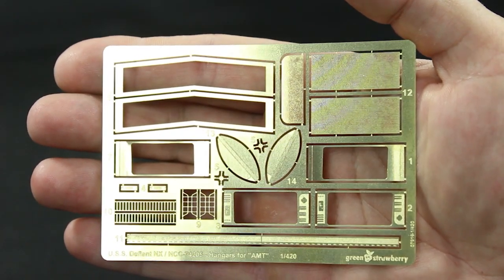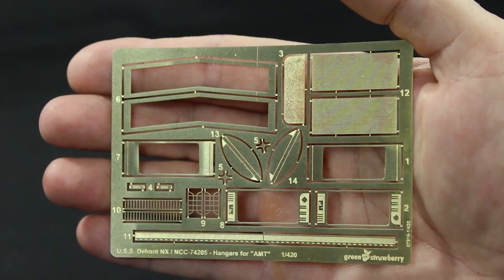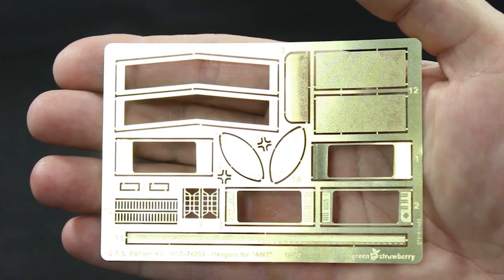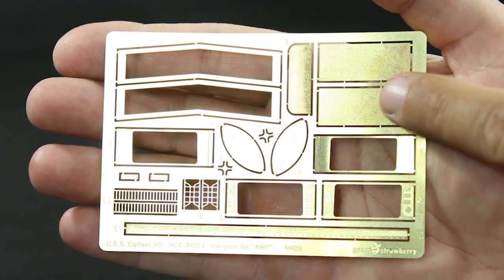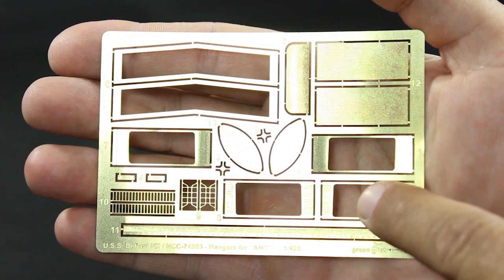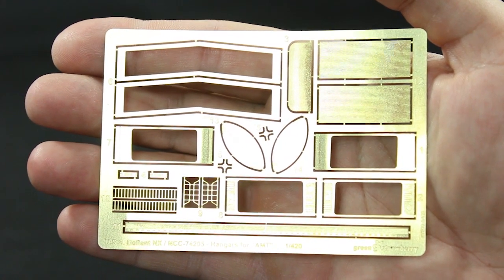Next up we're going to take a look at the photo etch sheet. Sorry about the glare. It comes with two roll down doors for the hangar bays, open shuttle doors for the side hangar bays, and the main hangar bay detail.